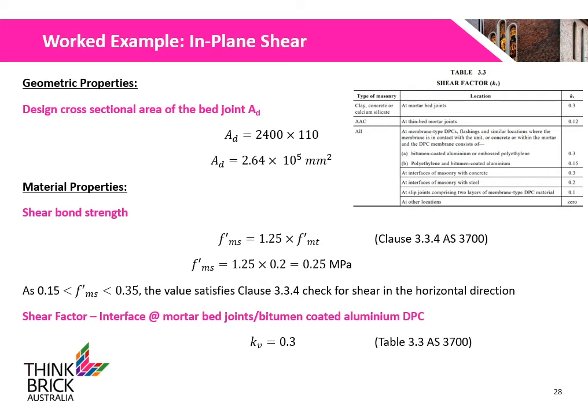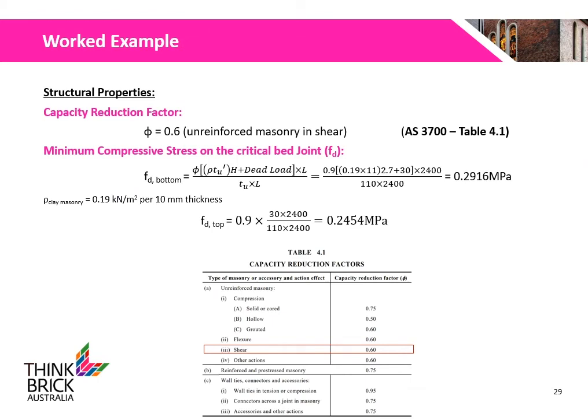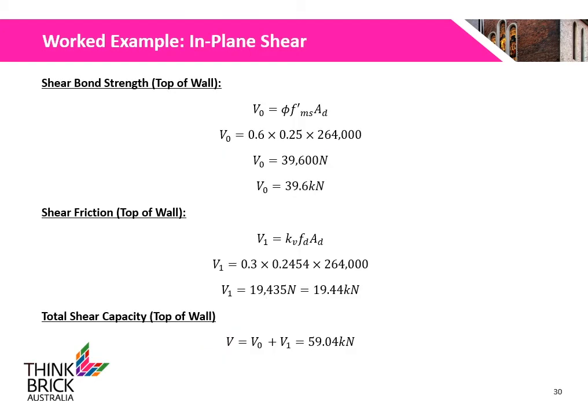The shear factor KV is 0.3 where a DPC is located, obtained from Table 3.3 of AS3700. The capacity reduction factor for unreinforced masonry is 0.6. The minimum compressive stress on the critical bed joint is 0.2916 MPa and 0.2454 MPa at the bottom and top of the wall respectively. The shear bond strength at the top of the wall is calculated to be 39.6 kN. Shear friction at the top of the wall is calculated to be 19.44 kN. The total shear capacity is calculated to be 59.04 kN.